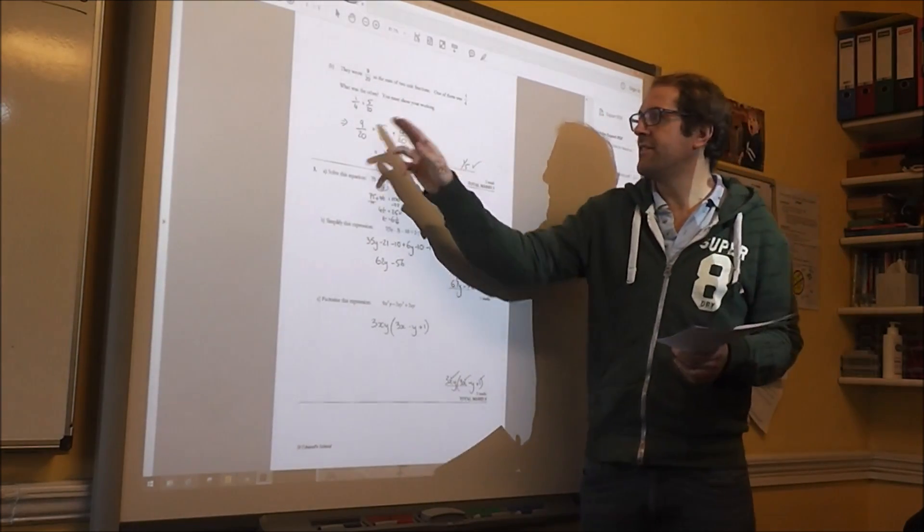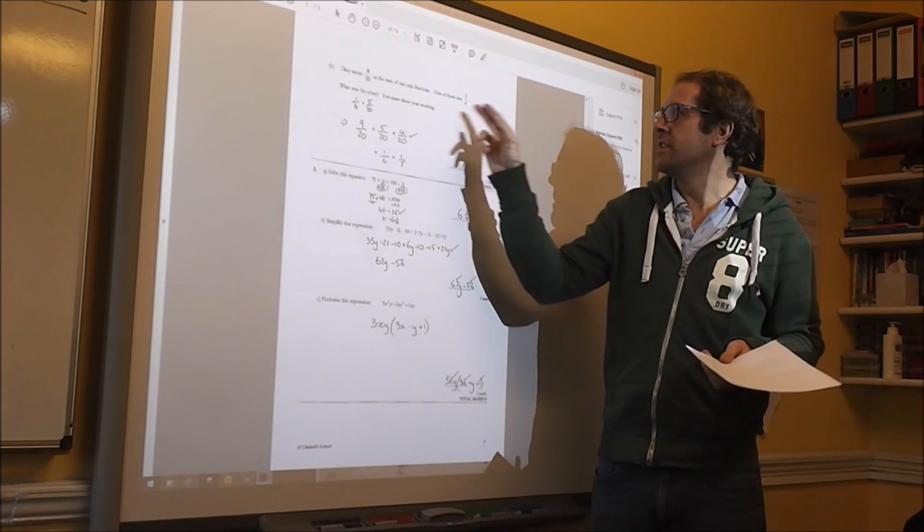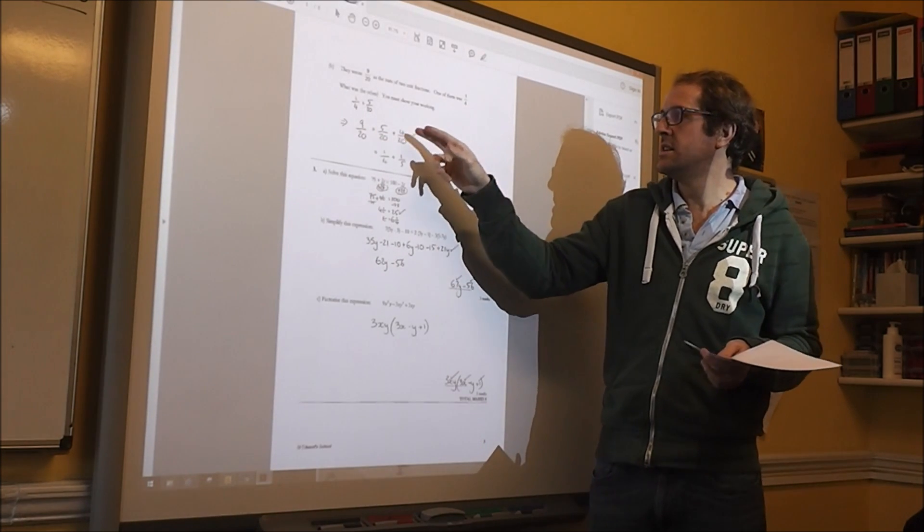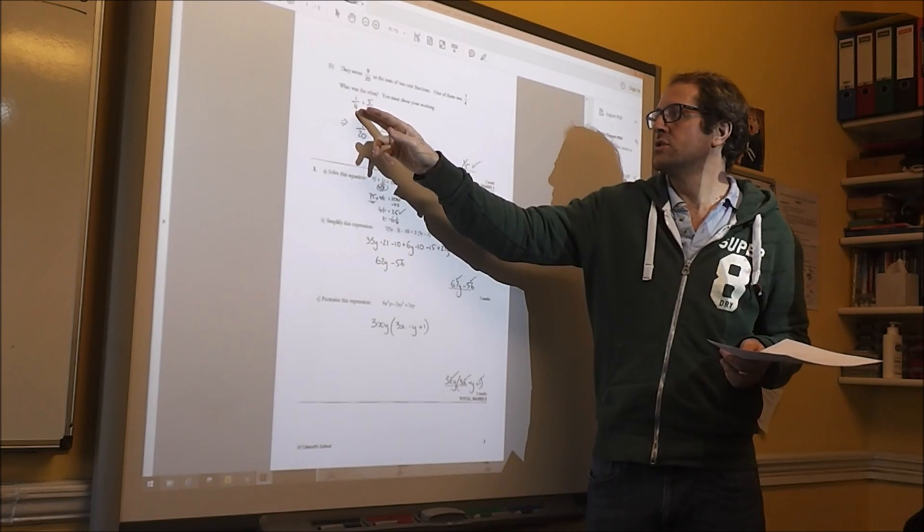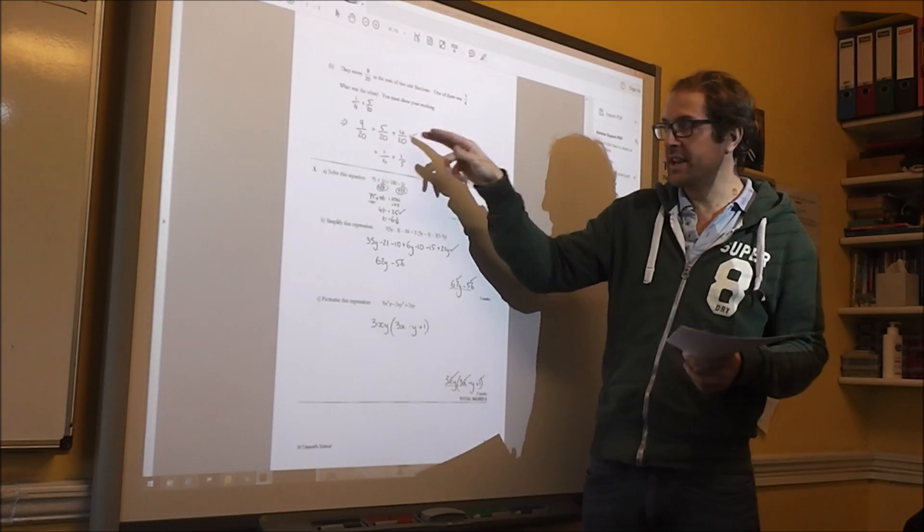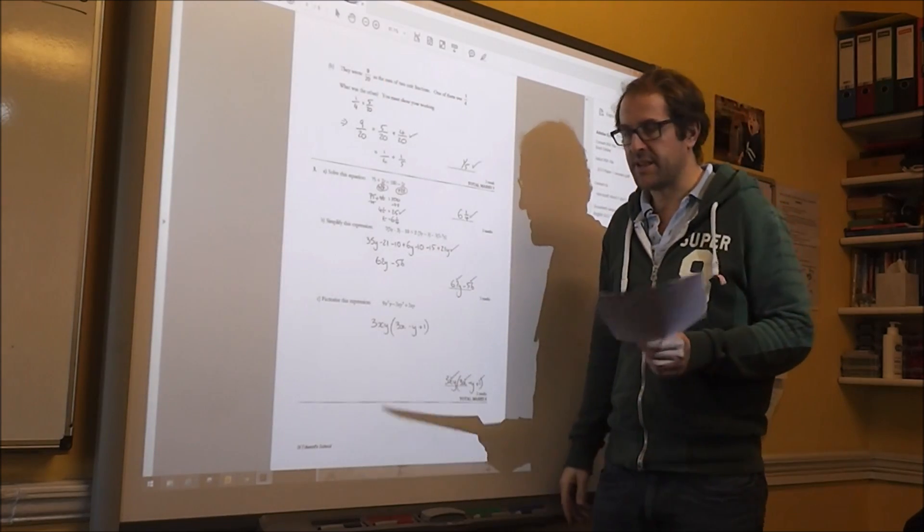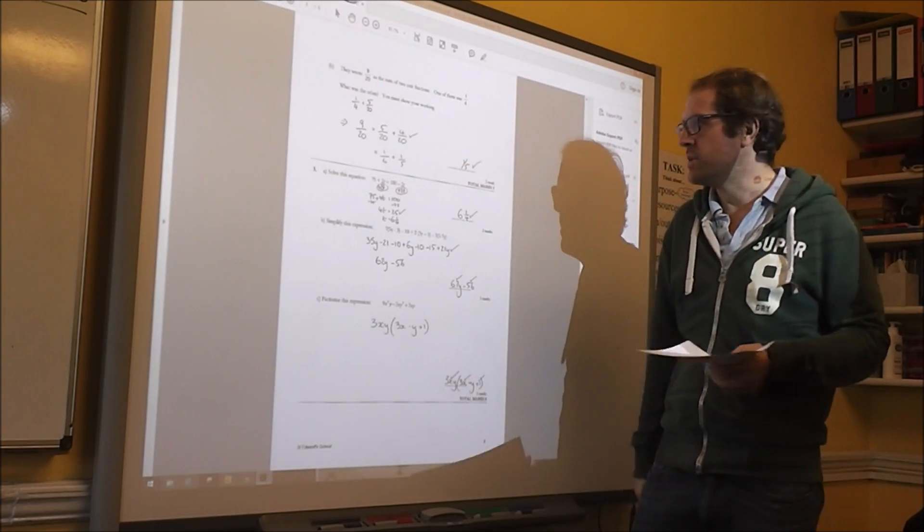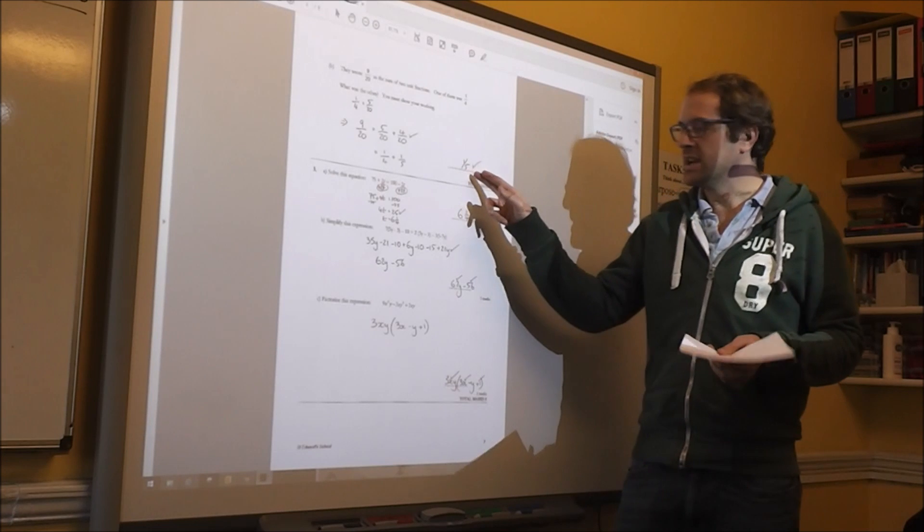And then to get 5 ninths, you're told that one of them is 1 quarter. So 1 quarter is 5 twentieths, which means you've got 4 twentieths left to make 9 twentieths and 4 twentieths is 1 fifth, so the other fraction is 1 fifth there.